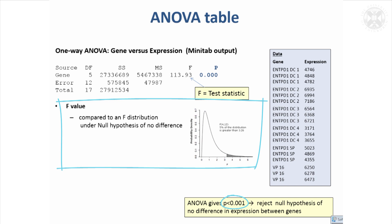Unless you're particularly interested, you don't really need to understand much about the F-distribution, other than that it's a statistic used to test the hypothesis that all the groups are the same. It's the p-value you're really after — as long as you understand that the p-value is the probability that the groups are the same, a very small p-value allows you to conclude that they're different.